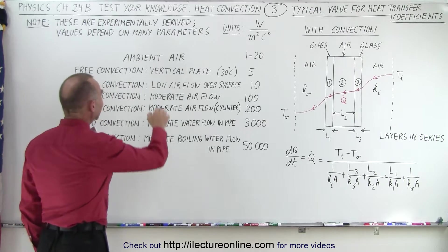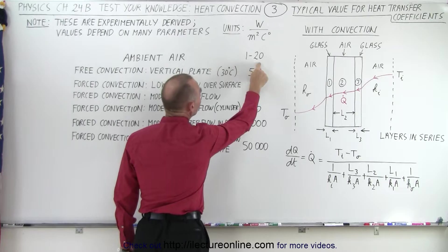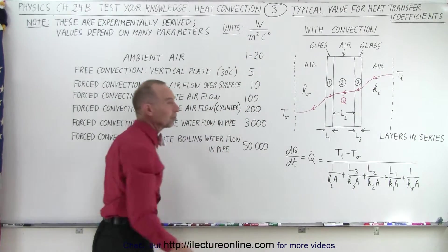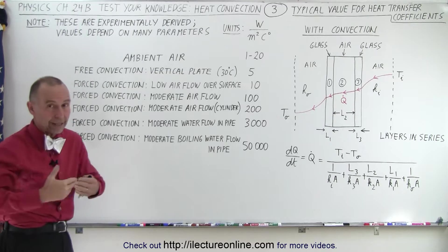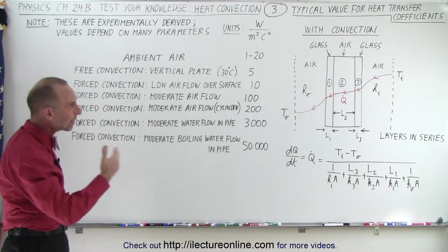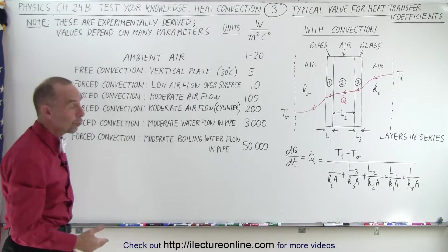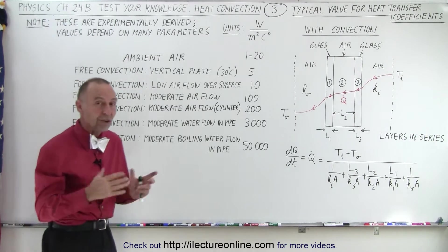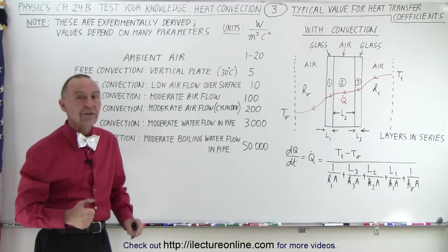For example, in ambient air, the coefficient is somewhere between 1 and 20 watts per square meter per Celsius degree. Now that's a huge range with ambient air. We're talking about air that's not moving. So why can there be such a huge difference between those values? Well it depends a lot upon what the temperature is, what the temperature difference is, what the surface is made out of, and so forth.